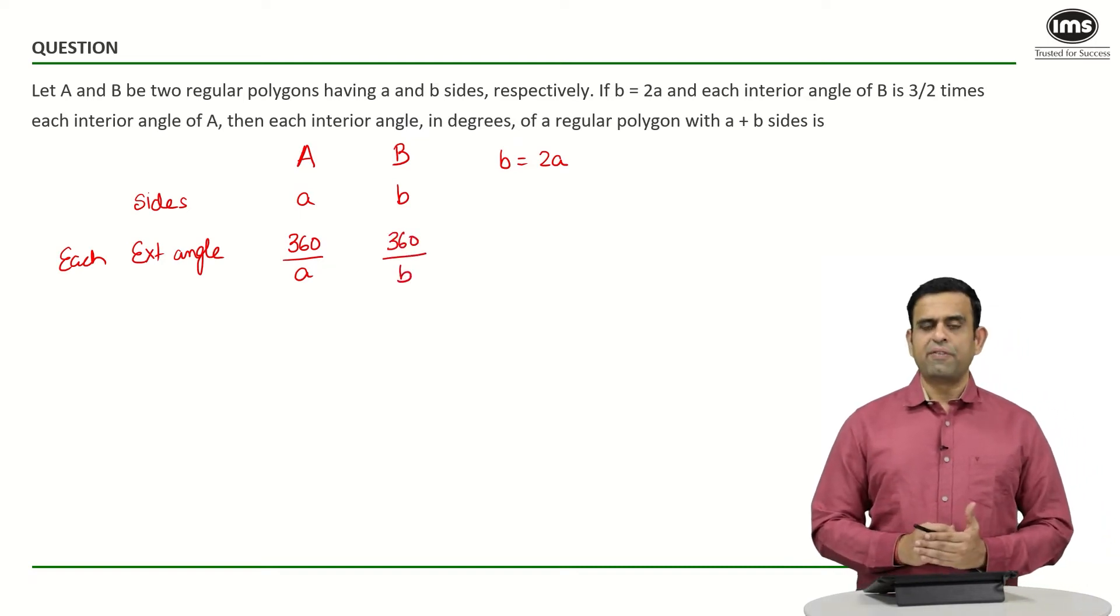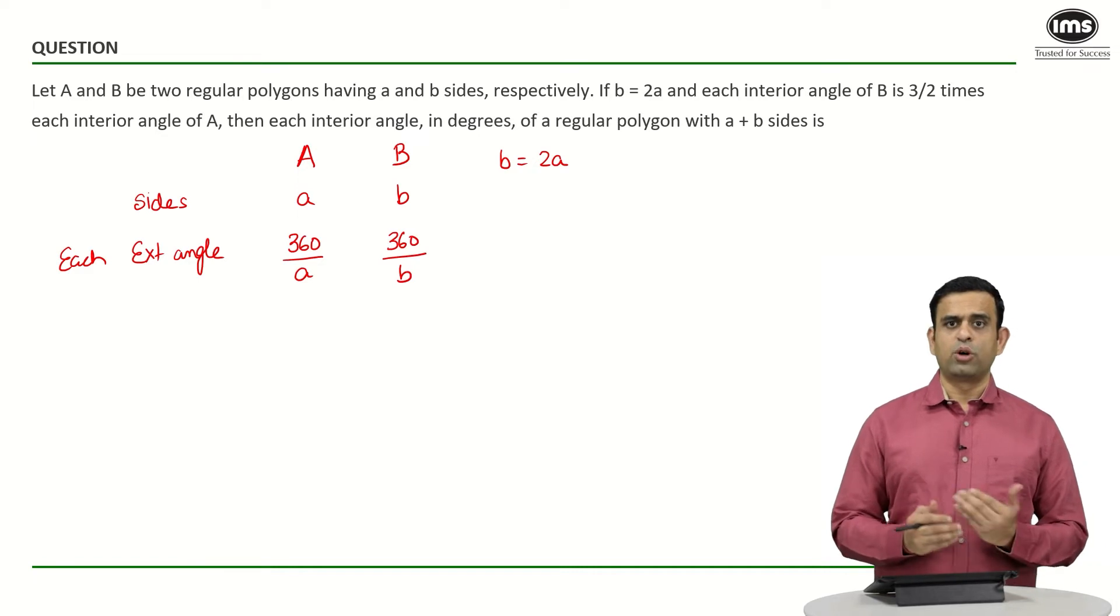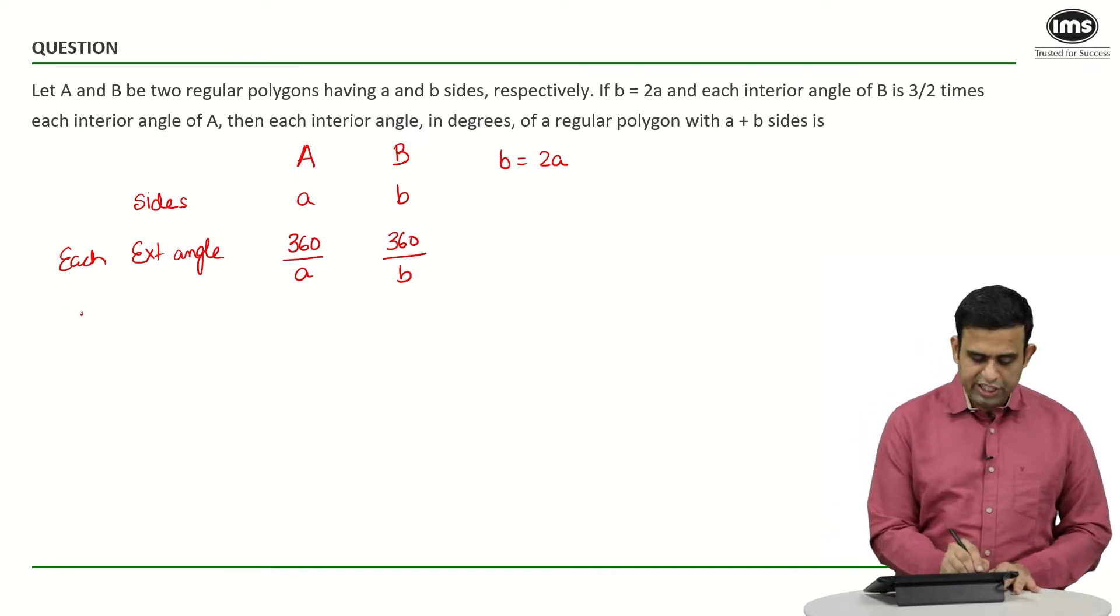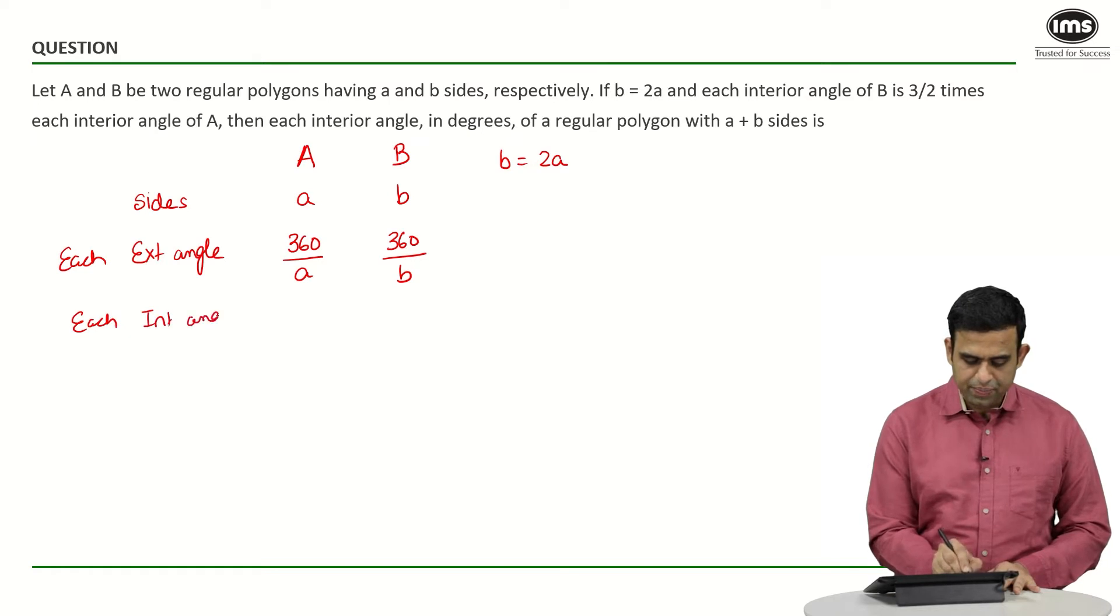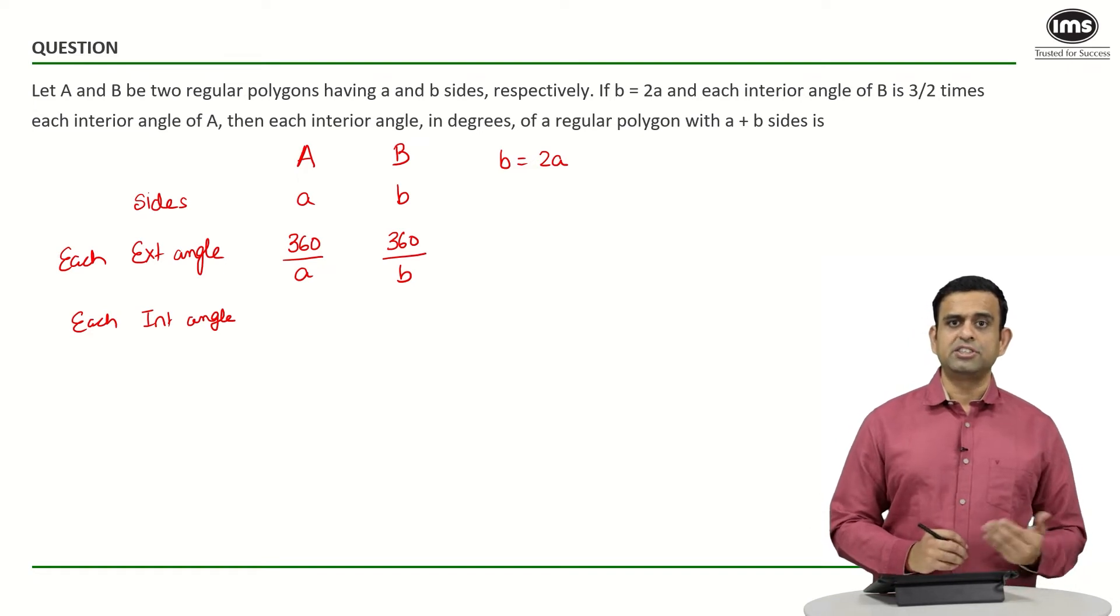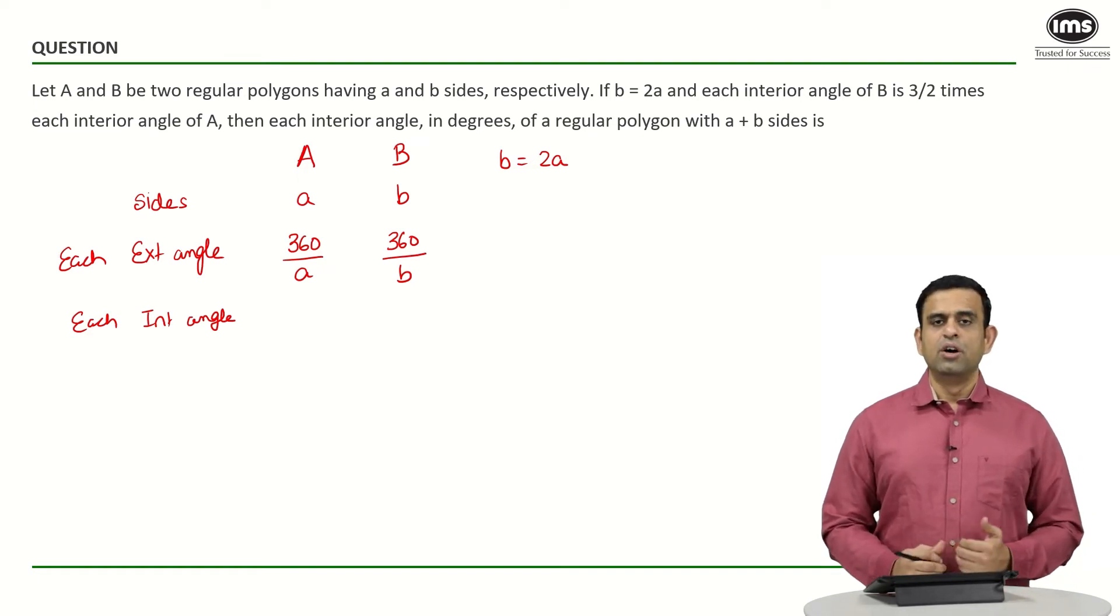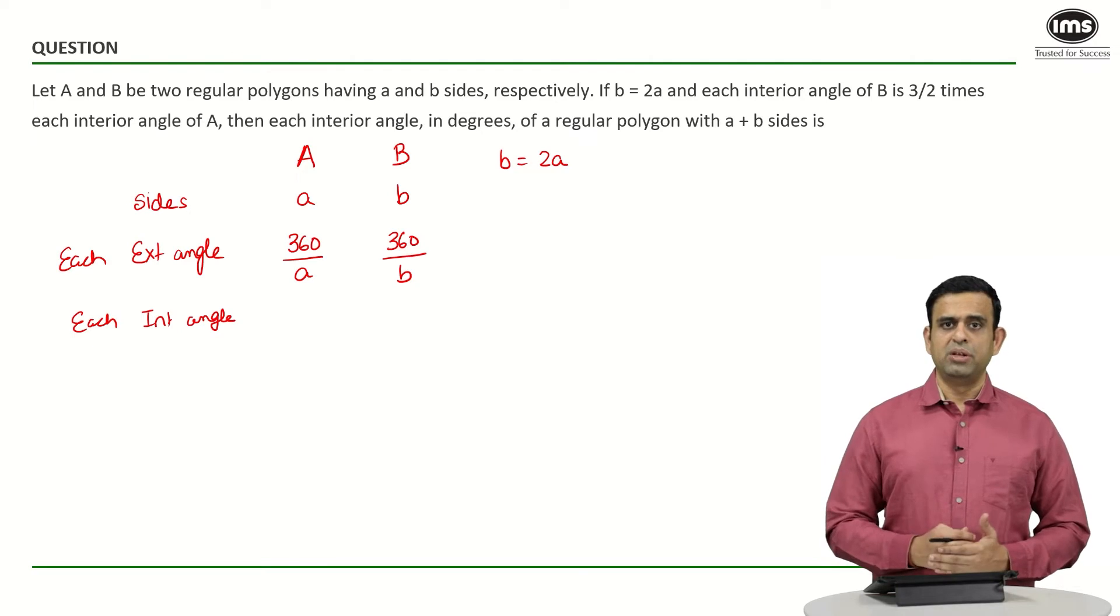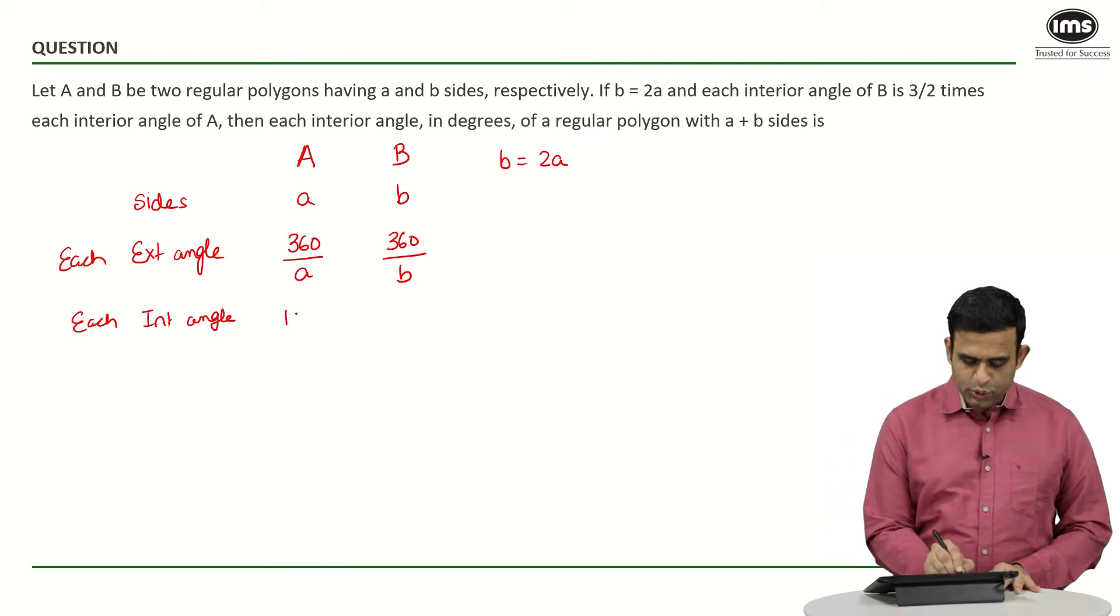How can I find each interior angle? Each interior angle will equal 180 minus each exterior angle. Please note that each exterior and each interior angle for a polygon are supplementary. So it must be 180 minus 360 divided by small a, and likewise 180 minus 360 divided by small b.